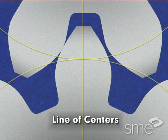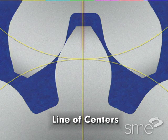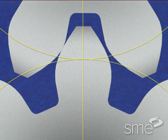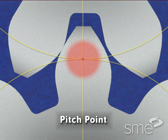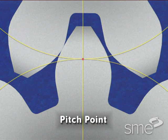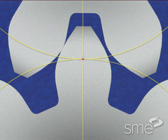The line of centers is the line connecting the pitch circle centers of two mating gears. The pitch point is the point of tangency of two mating gear pitch circles through the line of centers.